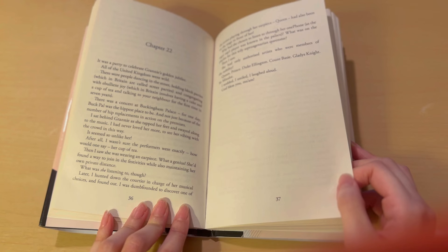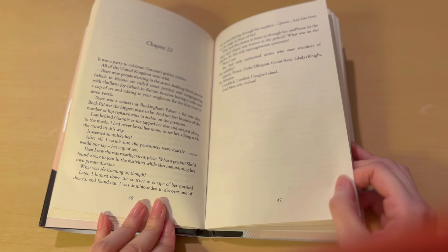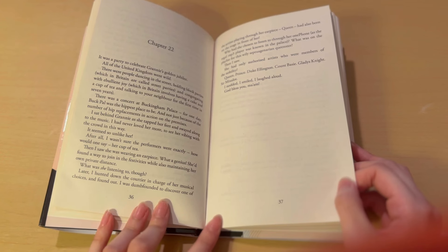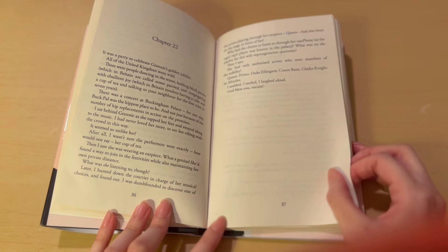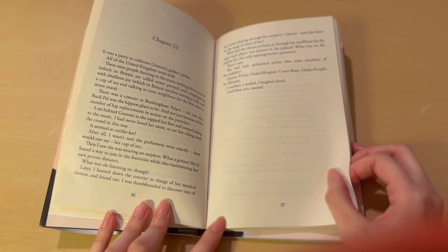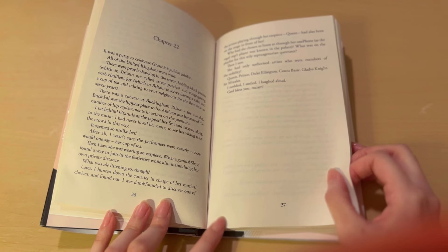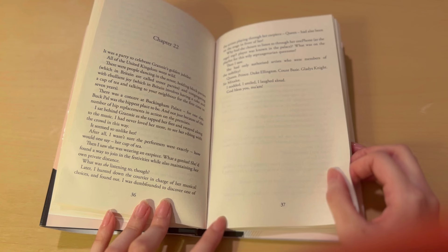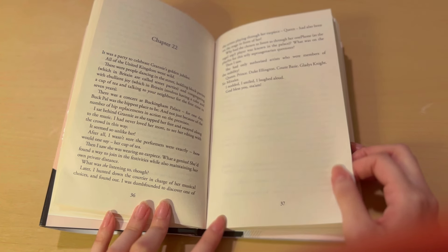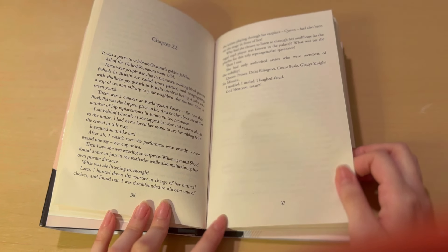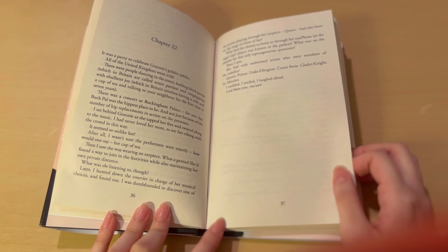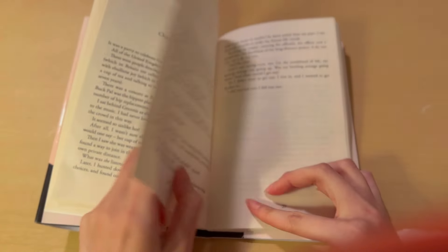Later, I hunted down the courtier in charge of her musical choices and found out I was dumbfounded to discover one of the artists playing through her earpiece, Queen, had also been on the stage in front of her. Why had she chosen to listen to through her one phone, as the regal MP3 player was known in the palace? What was on the playlist for this wily septuagenarian queenster? Then I saw she had only authorized artists who were members of the nobility. Queen, Prince, Duke Ellington, Count Basie, Gladys Knight, Sir Mix-a-Lot. I nodded, I smiled, I laughed aloud. God bless you, ma'am.